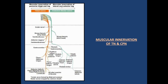This diagram shows muscular innervation of the posterior thigh and leg by the tibial and common peroneal nerve. The tibial nerve supplies biceps femoris long head, semi-tendinosus, adductor magnus, and semi-membranosus in the thigh. In the leg, it supplies gastrocnemius, flexor digitorum profundus, adductor hallucis, flexor digitorum brevis, flexor hallucis brevis, and lumbricals. The common peroneal nerve supplies biceps femoris short head only in the thigh, and in the leg supplies tibialis anterior, extensor digitorum brevis, extensor hallucis longus, extensor digitorum longus, fibularis longus, and fibularis brevis.